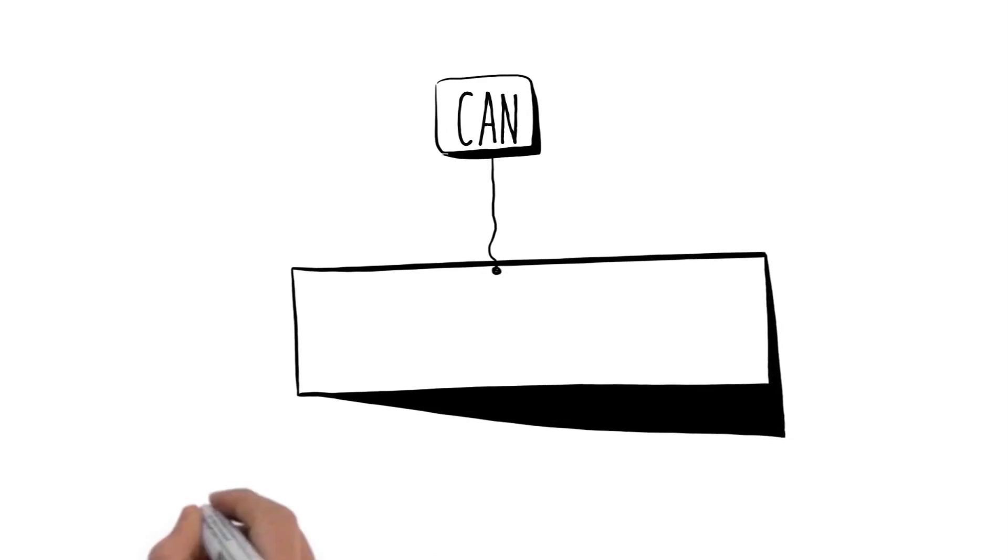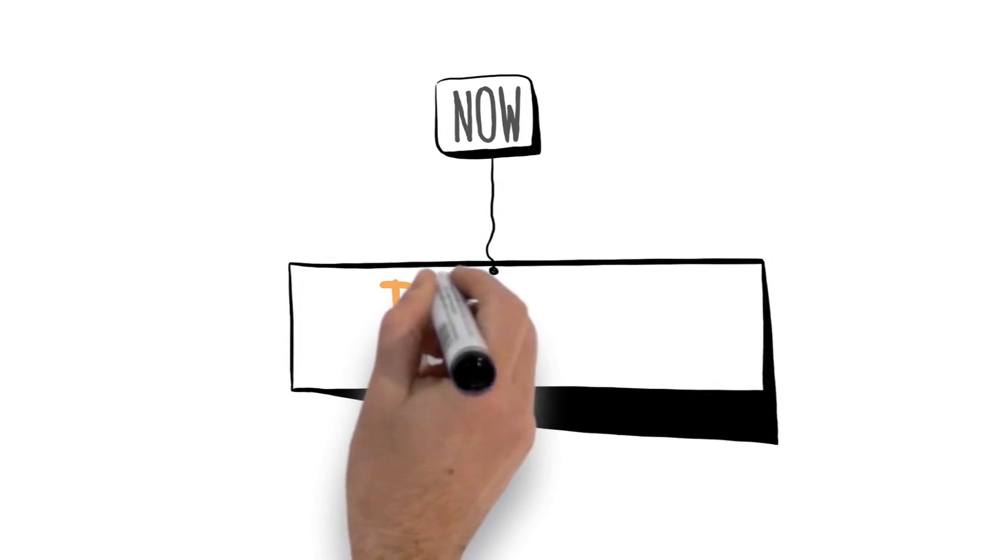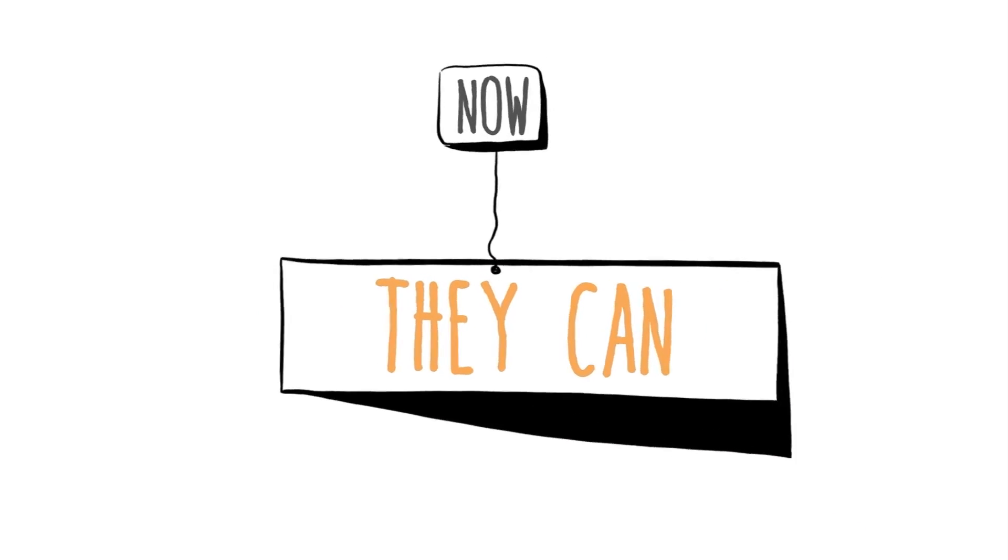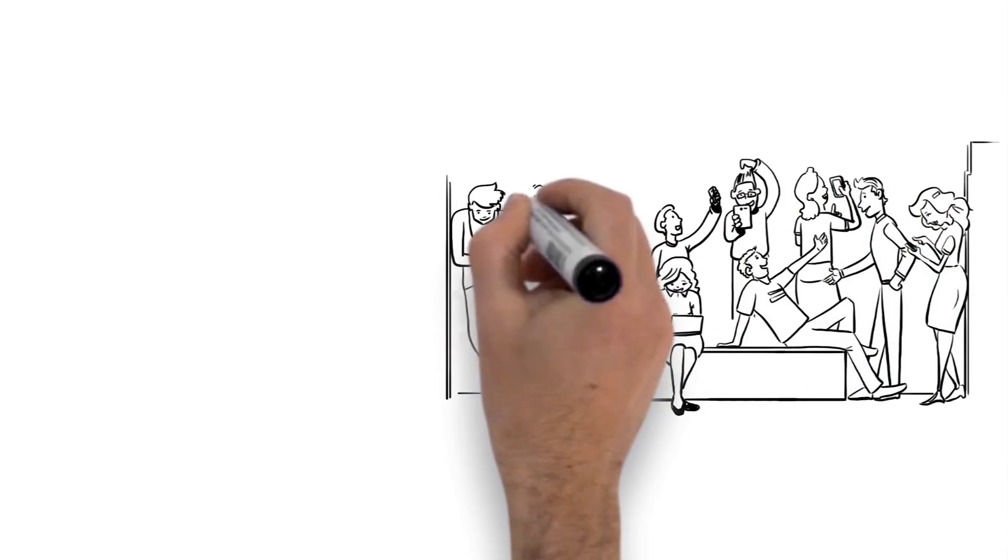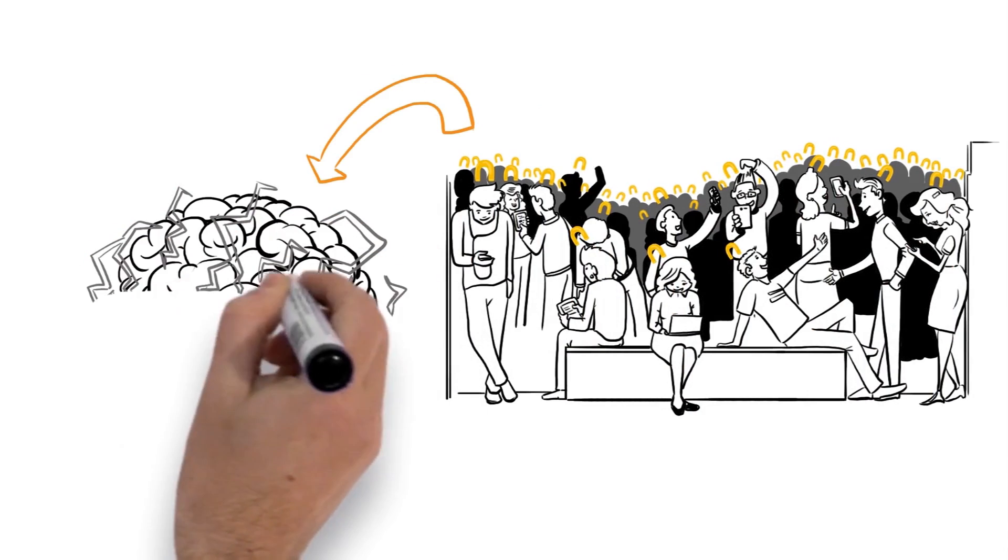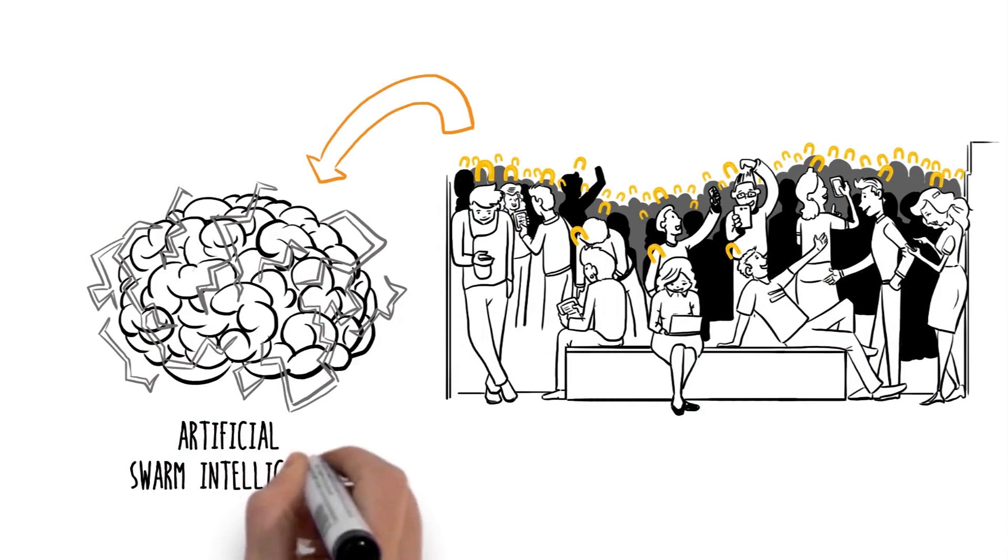The question is, can people swarm? Now they can. Researchers at Unanimous AI have developed an innovative technology to allow any online group to form an artificial swarm intelligence